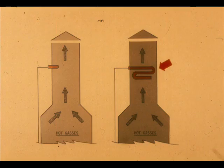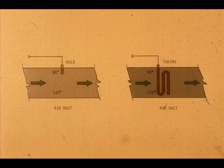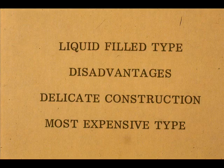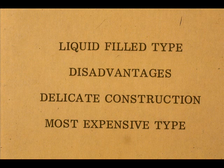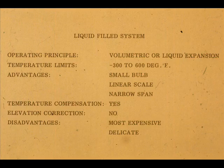Since liquid-filled systems measure average temperature, a length of tubing may be substituted for the bulb for fast response in air or gases. In some installations, such as large air ducts, this average reading is more desirable than a point reading. It is also more accurate. The disadvantages of the liquid-filled type are its delicate construction and its high cost. Here is a summary of the characteristics of the liquid-filled system.